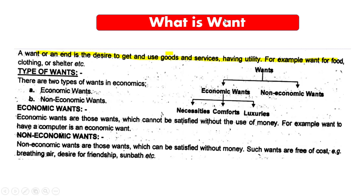Want is the desire to get and use goods and services having utility. So if you use goods or services that have utility, that constitutes a want. For example, if you want to use a drink like Sting or Coke, that is a want because you are using goods or services with utility.